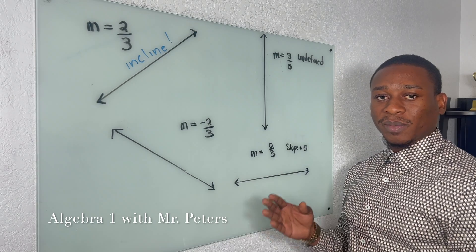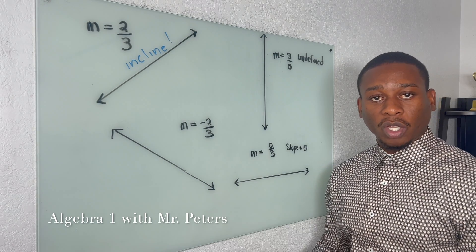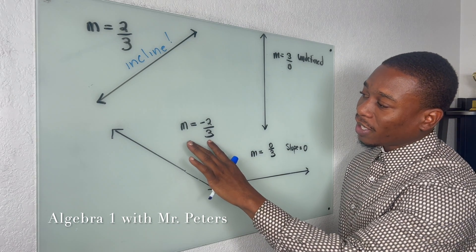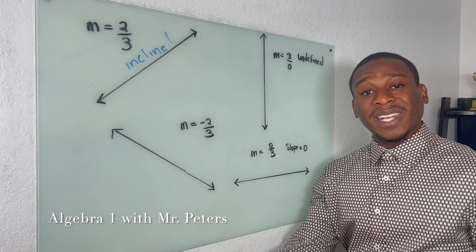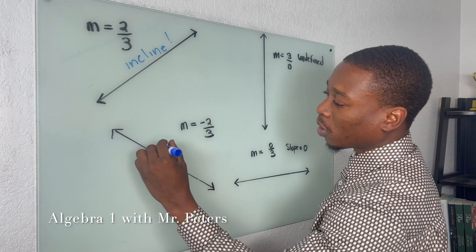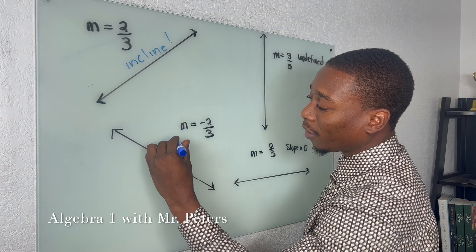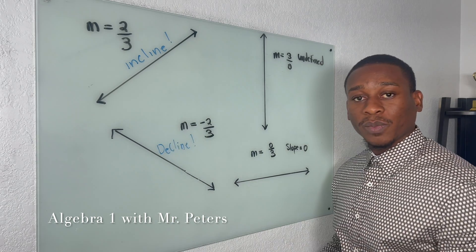Just remember, we read slope from left to right, and when the line is on an incline, the slope is going to be positive. Just imagine if you're climbing up some stairs, that is a positive slope.